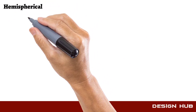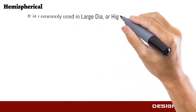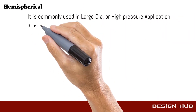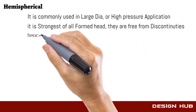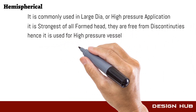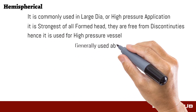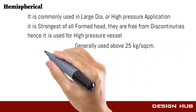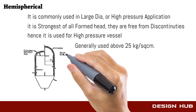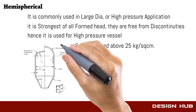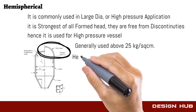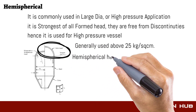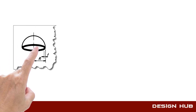For large diameter and high pressure applications, these are the strongest type of head, because this type of head is free from discontinuities. Due to that, this type of head is used for high pressure. Pressure can be calculated using these formulas.